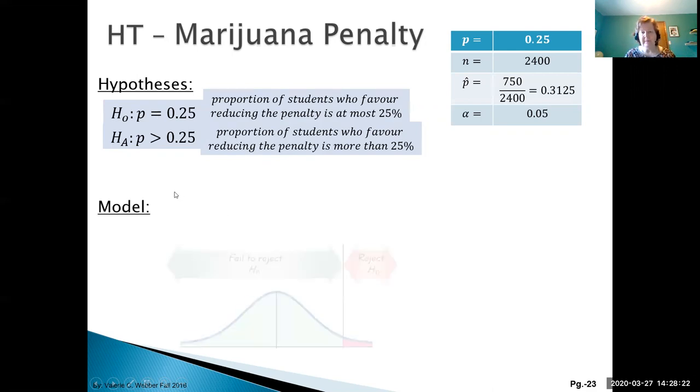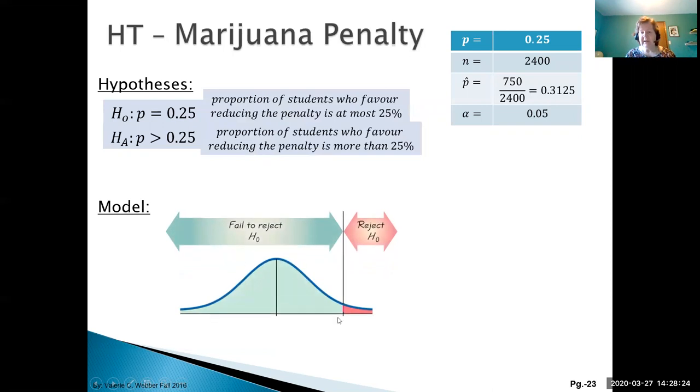Let's take a look at our model. We have a one-tail greater than test, so we have our reject region to the right and our fail to reject region to the left.